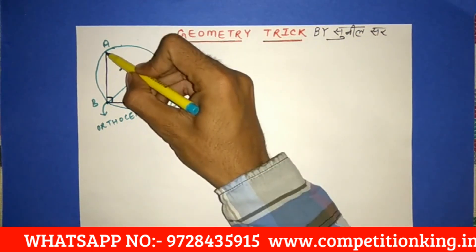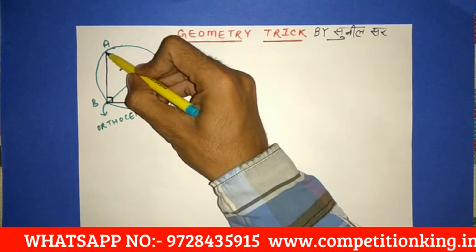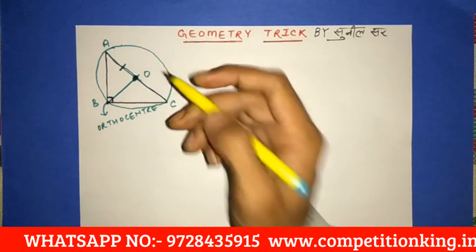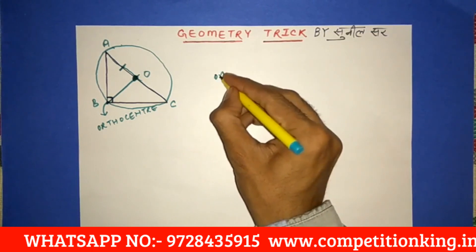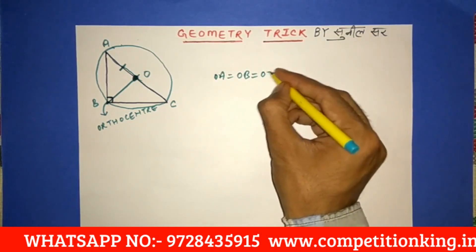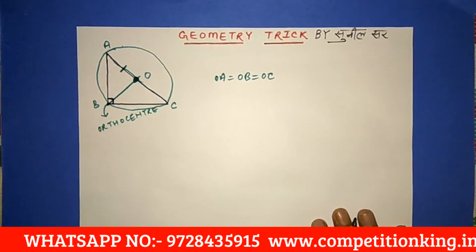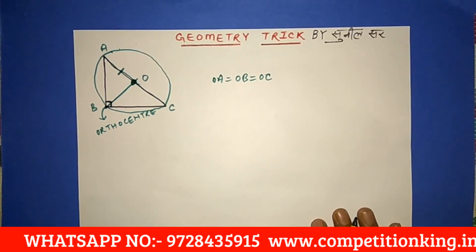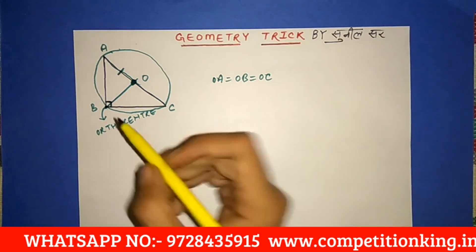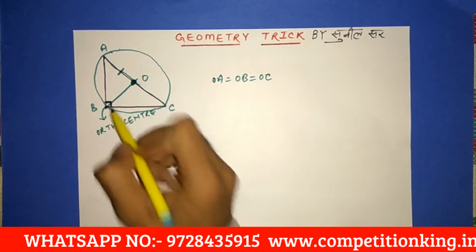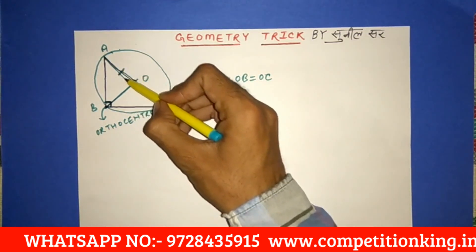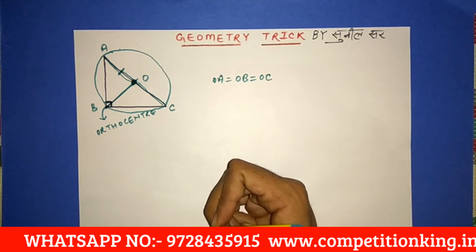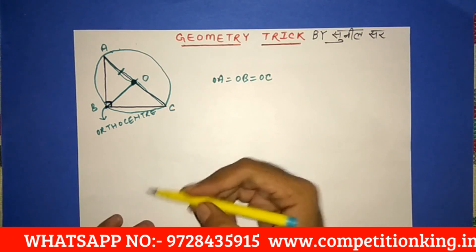The circumradius is the radius from the circumcenter to each vertex. So OA is equal to OB is equal to OC. From this, one very important result comes out: if this angle is 90 degrees, then these three sides OA, OB, and OC will always be equal. And the converse is also true.